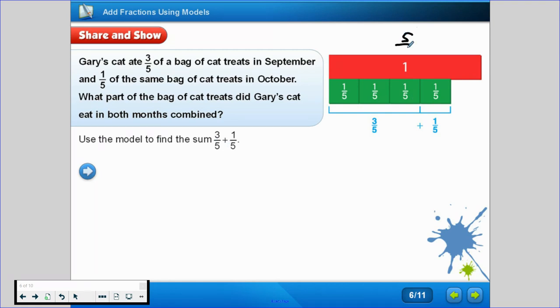It says use the model to find the sum 3/5 plus 1/5. So as you can see here, here's our whole, which we could also think of as 5/5. We've got 1, 2, 3/5 plus 1/5. So if we count the model together: 1, 2, 3, 4. 3/5 plus 1/5 equals 4/5. So 3/5 plus 1/5 equals 4/5 of a bag. That cat's going to need some more treats.